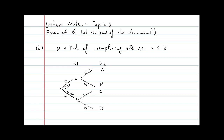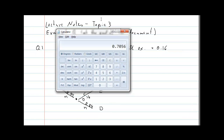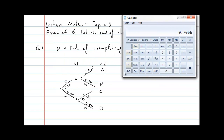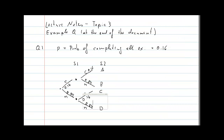The probability on the upper branch was 0.16 and 0.84 on the lower. Since these are independent events — whether the second student completes is independent of what the first student did — we can calculate the joint probabilities. As the events are independent, we use the multiplication rule.